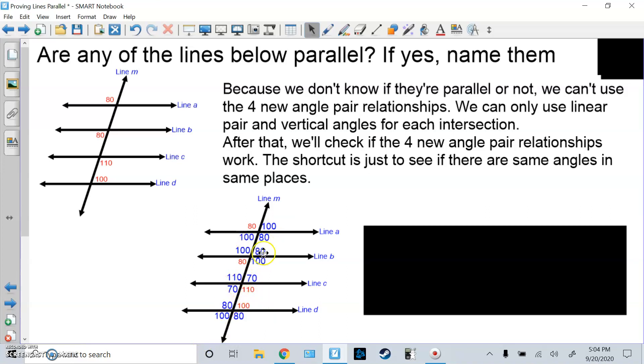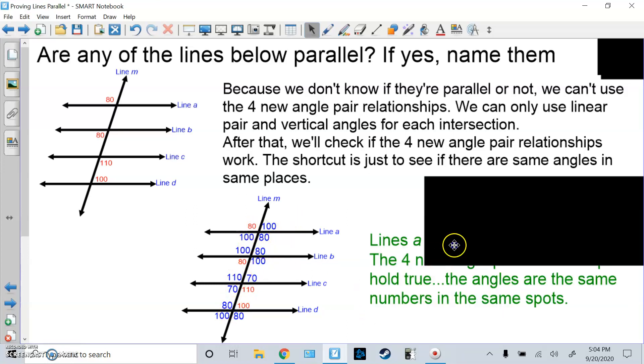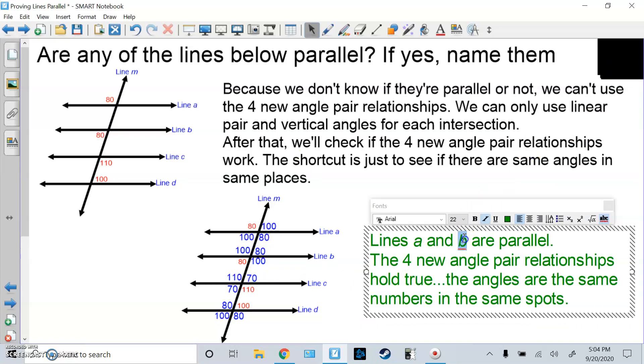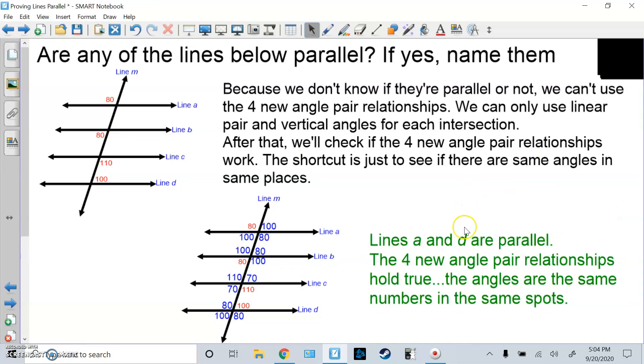Or you could say, oh look, this is alternate interior, 80 and 80, or alternate interior, 100 and 100, those are supposed to be equal. Here's alternate exterior, 80 and 80, those are equal. 100 and 100, those are equal. Same side interior adds to 180, so 180 makes 180, that's good. So all of them are true, so lines A and D are parallel. The four new angle pair relationships hold true, and the angles are the same numbers in the same spots.